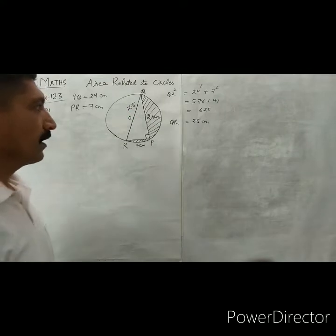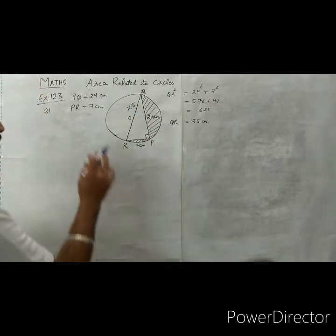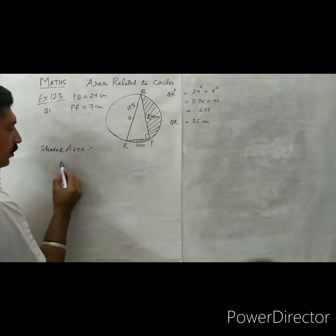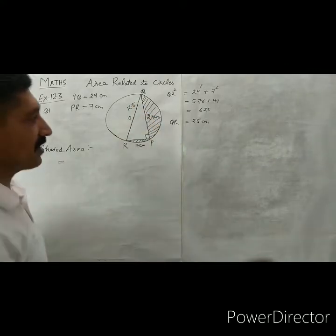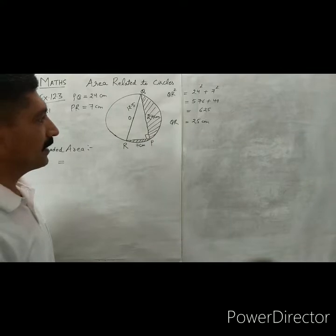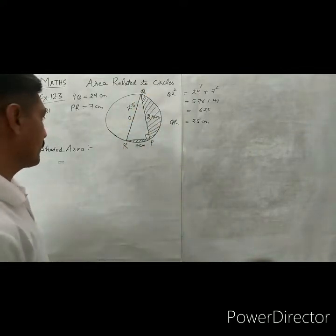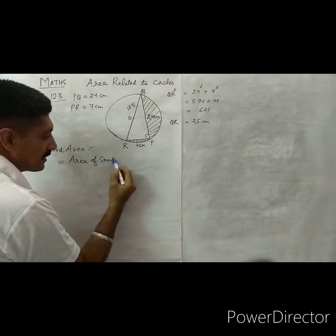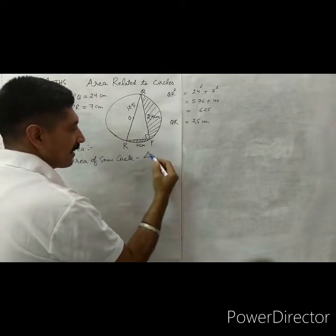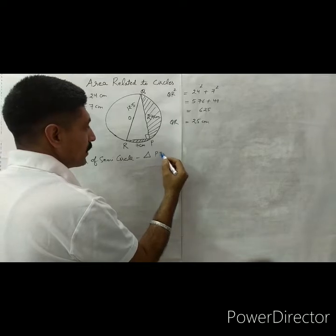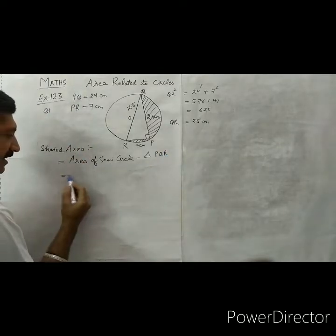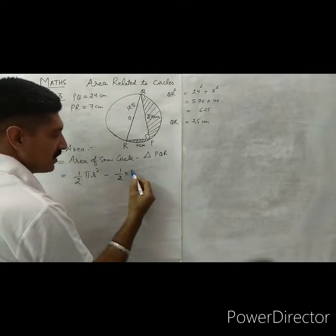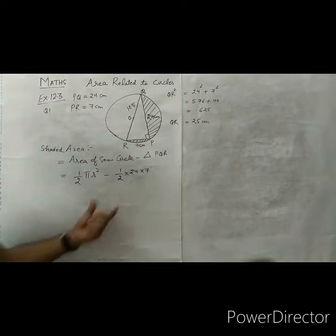Now in this figure we have to find the shaded area. The shaded area is equal to the area of the semicircle minus the area of the right angle triangle QPR. So shaded area = (1/2)πr² minus (1/2) × base × height.